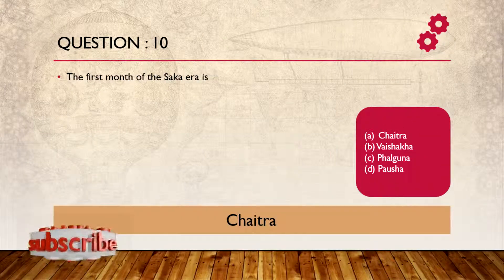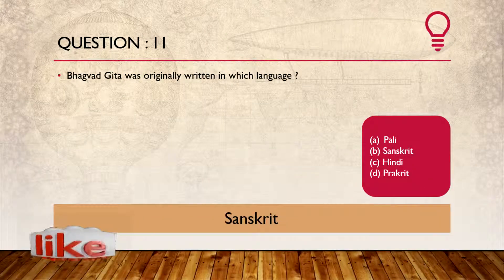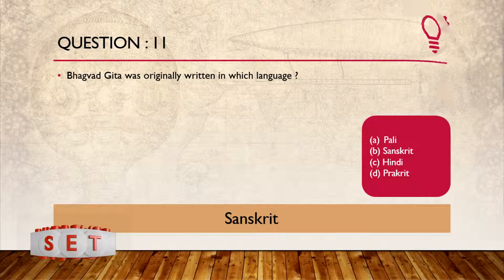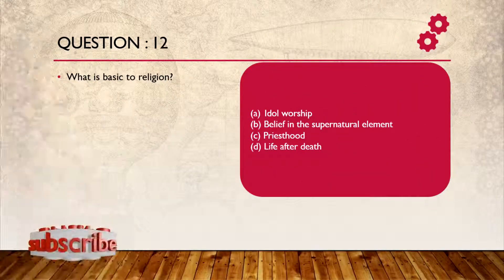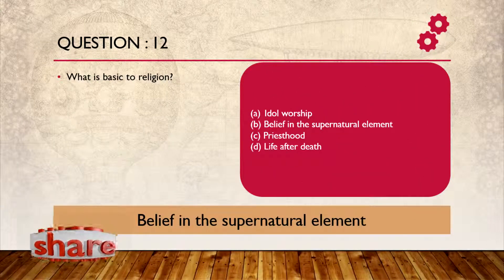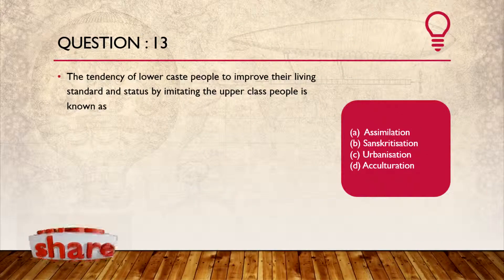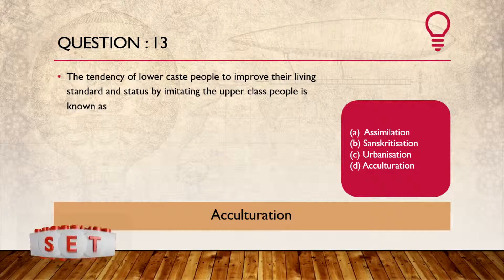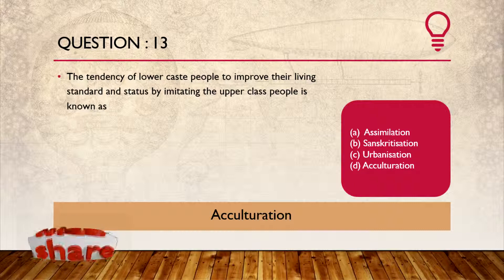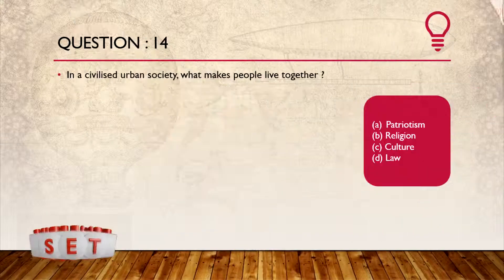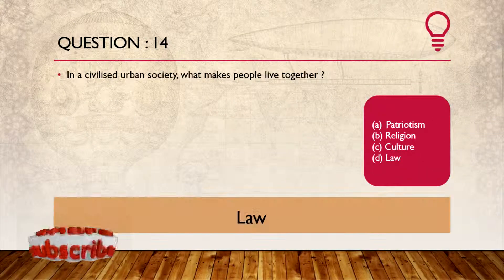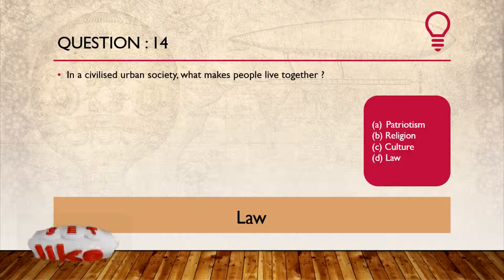Question number 9: In a civilized urban society, what makes people live together? The answer is law.